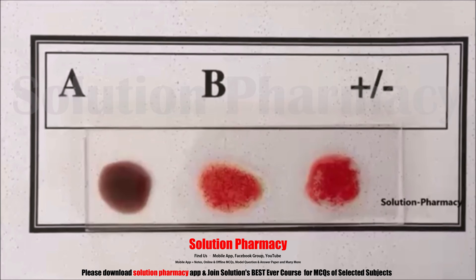Human blood is divided into four categories: A blood group, B blood group, AB blood group, and O blood group. This grouping into A, B, AB, and O is based upon the presence or absence of antigens called agglutinogens, which are present on the surface of RBCs — red blood cells. Second are the antibodies, also called agglutinins, which are present in the plasma.